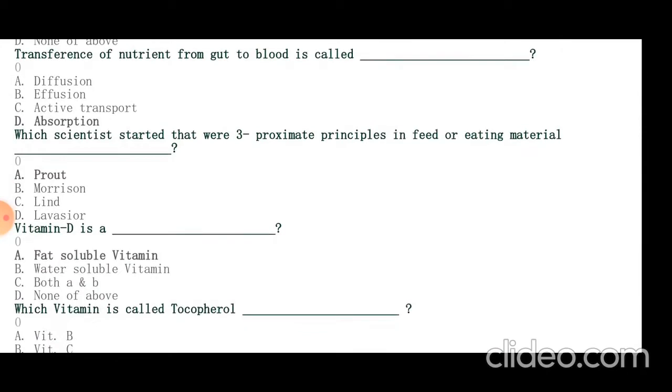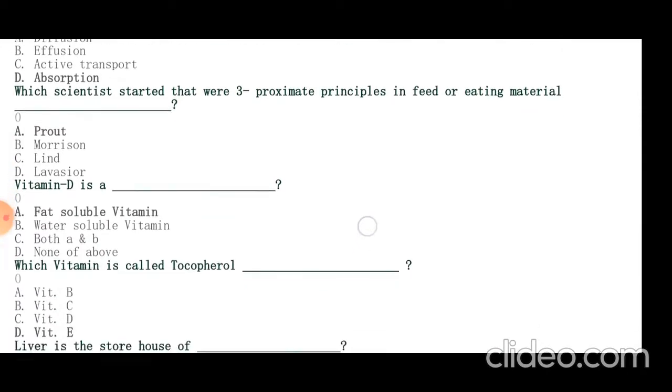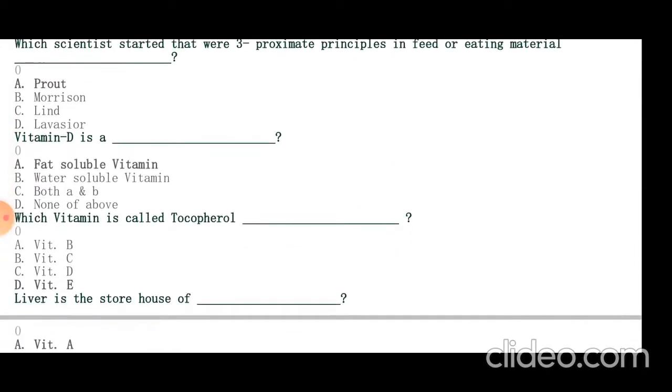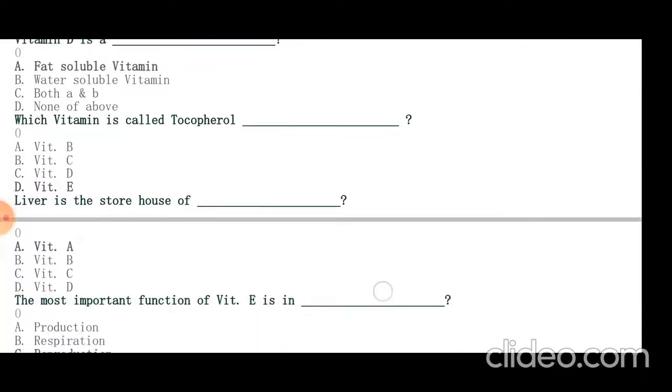Vitamin D is a fat-soluble vitamin. Vitamin E is called tocopherol. Liver is a rich source of vitamin A. The most important function of vitamin E is in reproduction.